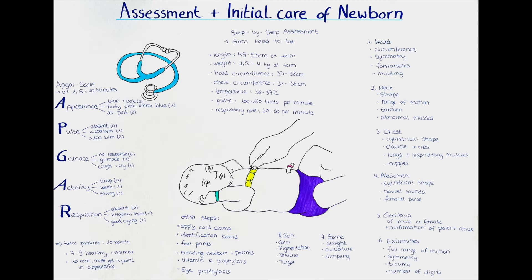R is for Respiration — essentially breathing. If the infant is not breathing we give zero. If the infant breathes but slowly or irregularly it's one point. Two points are given if the baby breathes well and regularly. Often crying is also a good indicator for proper breathing.